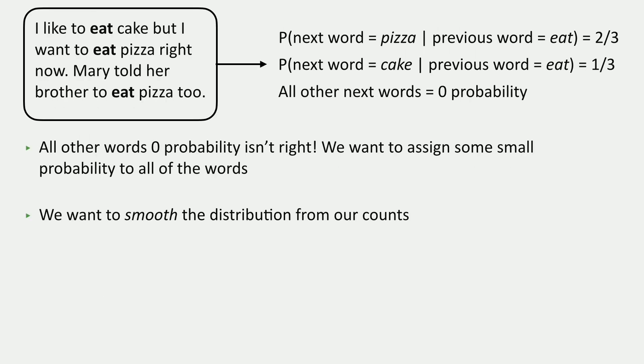Now, one slight tricky thing to make this actually work in practice is that when you see only a small amount of data, assigning every other word other than pizza and cake to have zero probability is somehow not the right thing to do. So instead, what we do is we apply something called smoothing, where we're going to make sure that every word has a non-zero probability.